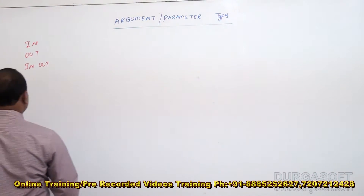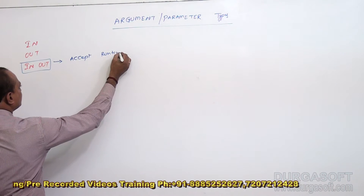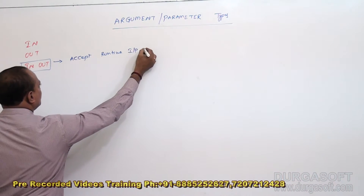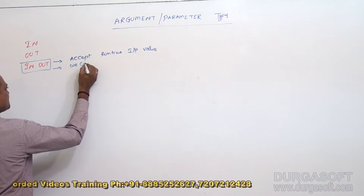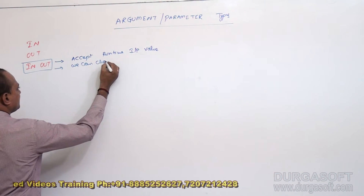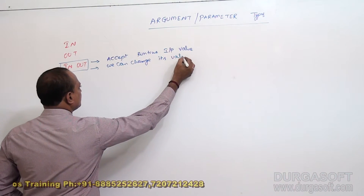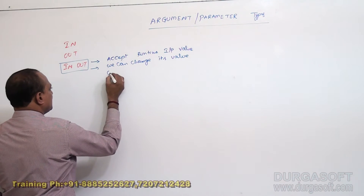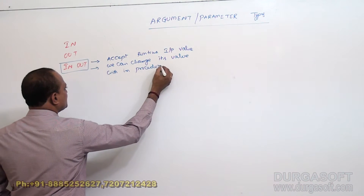Now let me explain about IN-OUT. We are talking about IN-OUT — what is the use? It accepts a runtime input value, that's the first point. And we can change its value within the procedure. Within the procedure, you can change its value.